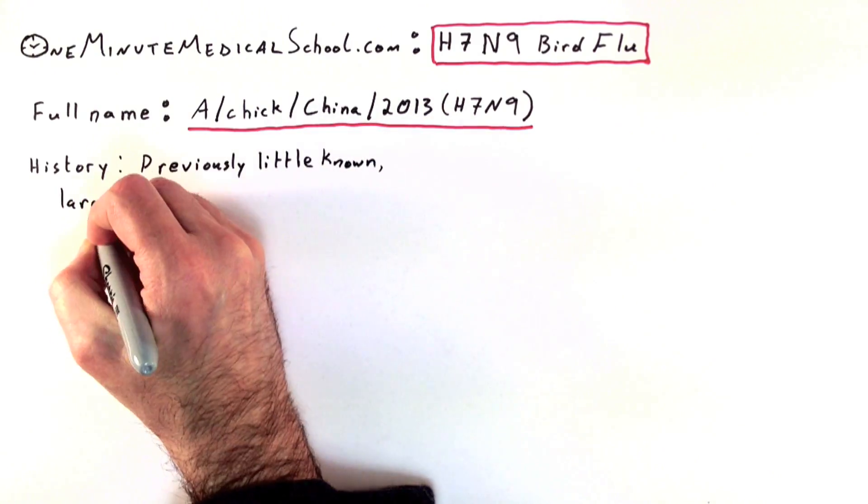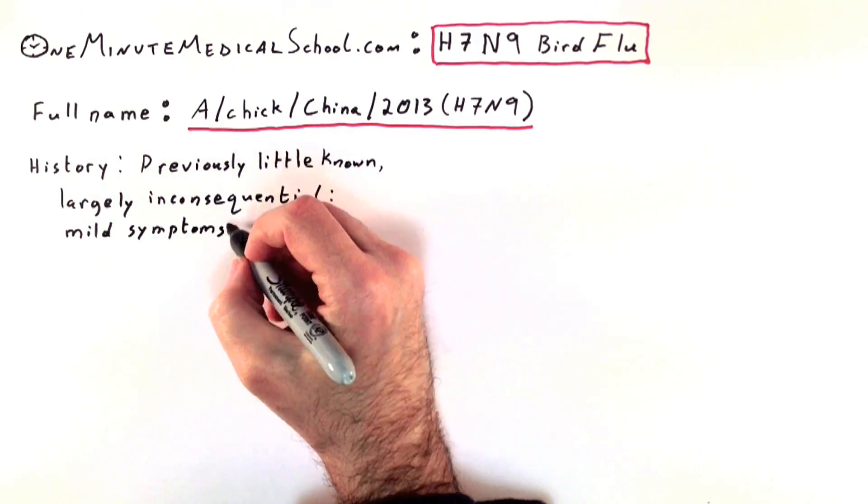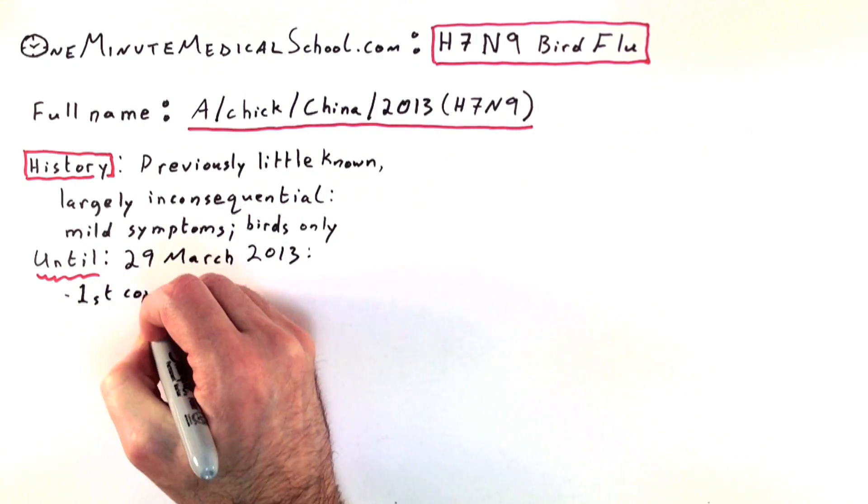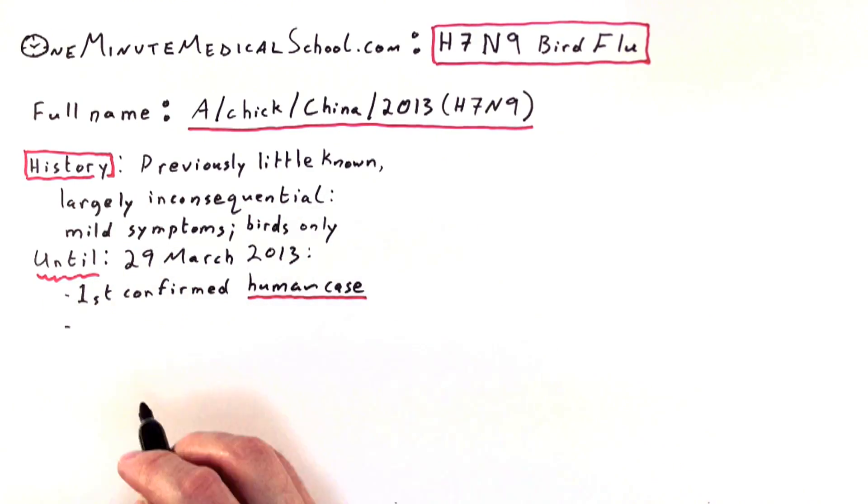It's previously little known because it was largely inconsequential, causing only mild symptoms mainly in chickens. But on the 29th of March, a first confirmed human case in a fatality from a Shanghai market was confirmed.